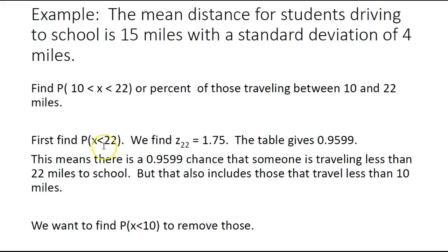We'll find the probability of being less than 22 miles, which means you need a z-score. Using the z-score formula, z of 22 is 1.75. If we look in the table, we'll get 0.9599. There's a 0.9599 chance someone is traveling less than 22 miles to school—around 96 percent. But less than 22 miles also includes less than 10 miles, so we need to find that probability and take it out.